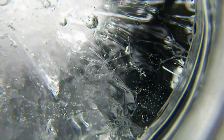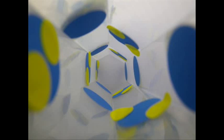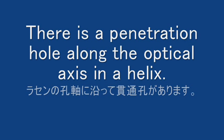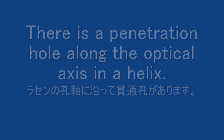In this video, we can see many shapes of bubbles in the ice, so we can consider the mechanism of bubbles in ice. The microscopic mechanism depends on the lattice structure of ice. It is a helical structure, as shown in the model. There is a penetrating hole along the optical axis in the network of helixes.